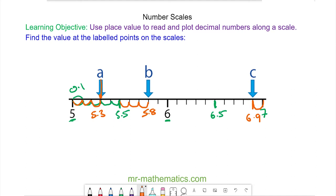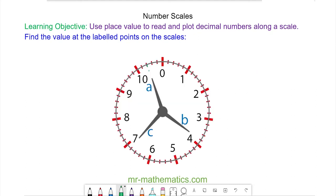Okay, let's try some more questions. In this question you can see we have 1, 2, 3, 4, 5 marks between 0 and 1. To work out the value of each division we have 1 divided by 5 marks, which you can write as a fraction as 1 over 5, and this will be 2 tenths.